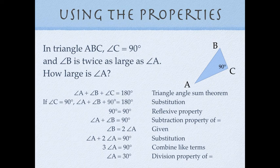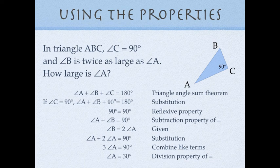Next I show 90 degrees equals 90 degrees — the reflexive property — and then subtract 90 degrees from both sides, leaving angle A plus angle B equals 90 degrees. The reason is the subtraction property of equality. You can abbreviate this as 'minus prop equals' in your proofs rather than writing it all out. We were also told that angle B is twice as large as angle A, which translates to angle B equals 2·(angle A). That was given, so by substitution we replace angle B in our equation.